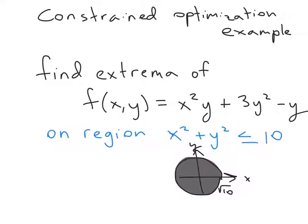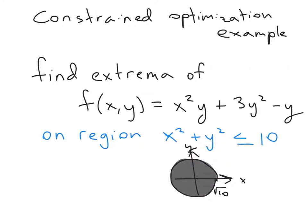I'm going to work an example of a constrained optimization problem. For this problem I want to find the extrema of f(x,y) = x²y + 3y² − y on the region x² + y² ≤ 10. This is a disk in the xy-plane.